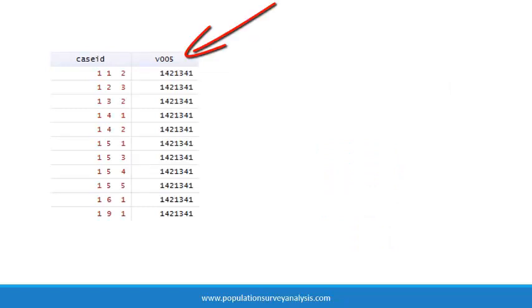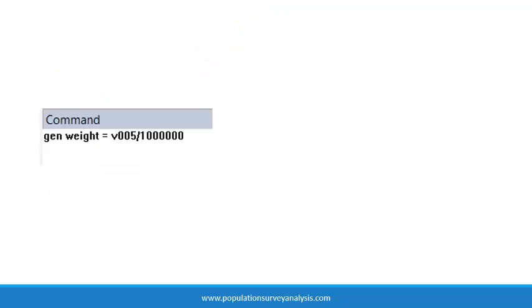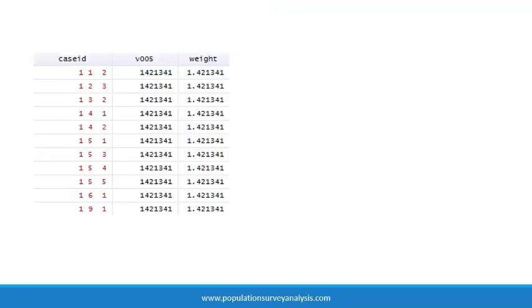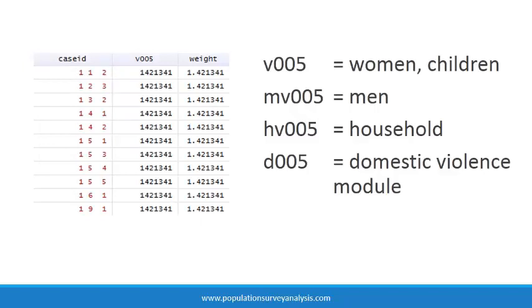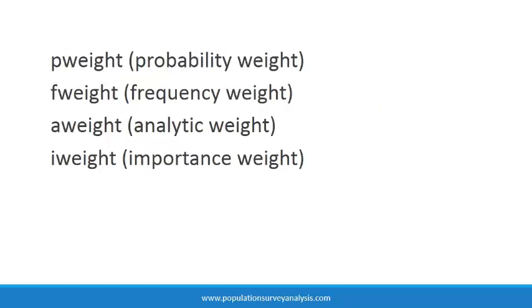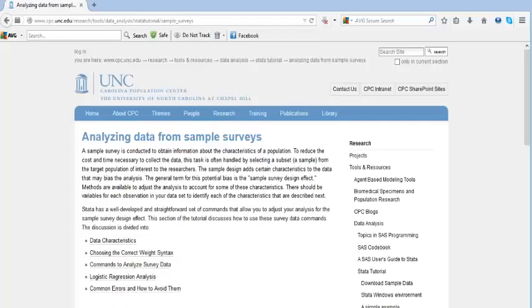In the demographic and health surveys, the p-weight variable is stored with no decimal points, so you must divide the relevant weight variable by one million. The weight variables include the women and children's weight V005, male weight MV005, household weight HV005, and the domestic violence module weight D005. The f-weight (frequency weight), a-weight (analytic weight), and i-weight (importance weight) are incorrect and should not be used for survey data analysis. Visit the UNC Carolina Population Center website for a concise explanation of why these other weights should not be used.